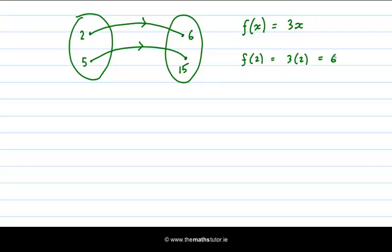So we say that 2 is mapped onto 6. We can also write it as a pair, 2 and 6. We can also write f(5) is equal to 3 times 5, which is 15. And that gives us the ordered pair.